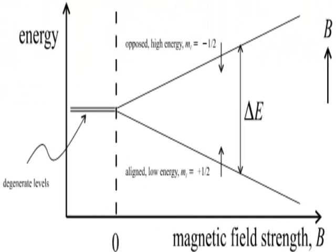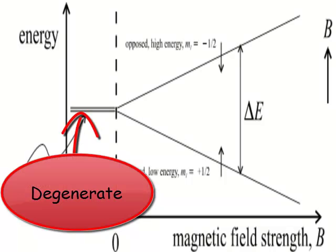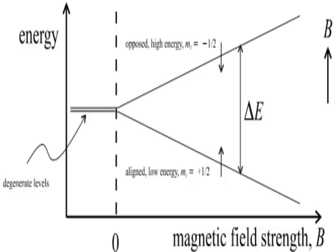Those two energy levels are only distinct from one another if we put the nucleus in a magnetic field. If we don't put it in a magnetic field, then the two things are degenerate with one another. So to do the spectroscopy at all, we have to apply a magnetic field. So we take our nucleus and apply a magnetic field to it.